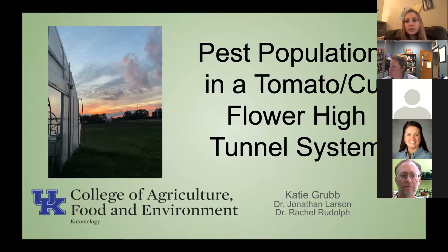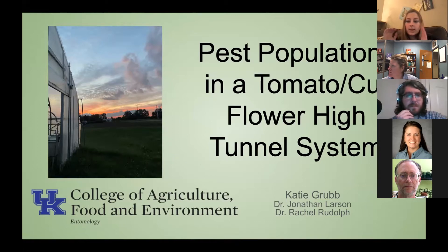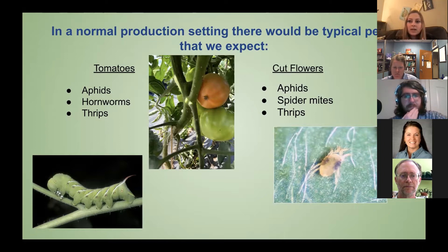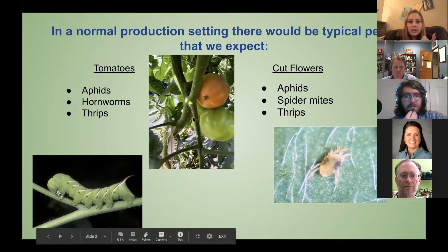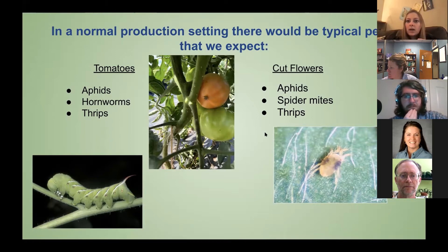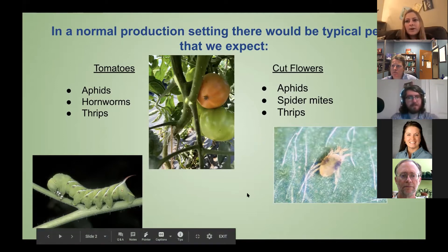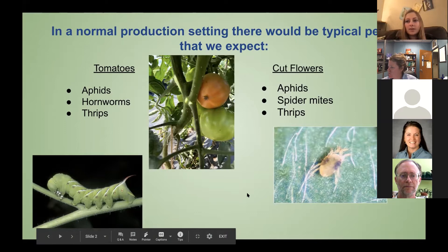I'll also be talking about pests that were seen after tomatoes and after flowers. During a normal production setting, there would be typical pests that you can expect to see. In tomatoes, those are usually aphids, hornworms, and thrips. There's a hornworm down here, and there are some aphids on these tomatoes — you can kind of see the aphid skins here.